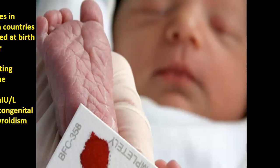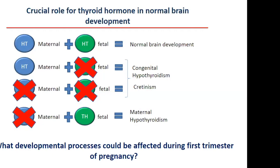All babies in Western countries are tested at birth for thyroid stimulating hormone, produced by the pituitary. If there are too-high levels of TSH, babies suffer from congenital hypothyroidism. The problem is that when only maternal thyroid hormones are disturbed during the first weeks of development — when the baby relies solely on maternal levels — we don't know the consequences. So we can ask what developmental processes could be affected during this first trimester.